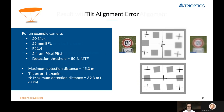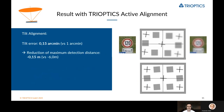With TrueOptics alignment, we can get this error down to 0.15 arcminutes. What this means is that the reduction in maximum detection distance only comes down to 15 centimeters, compared to six meters before.